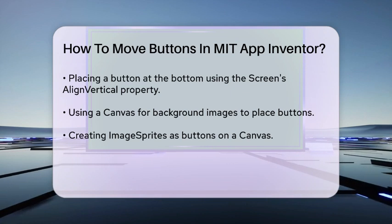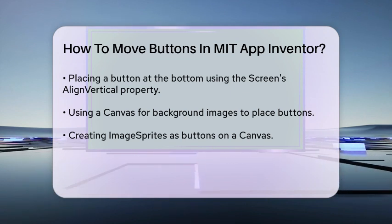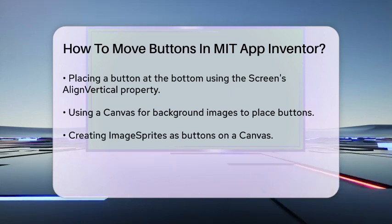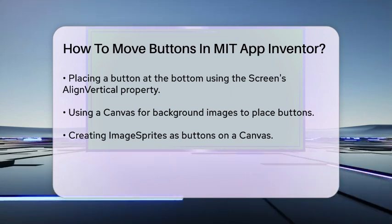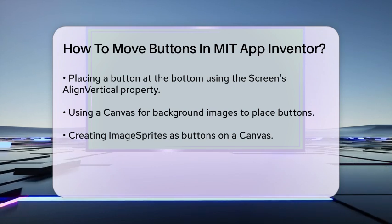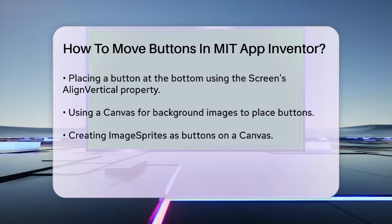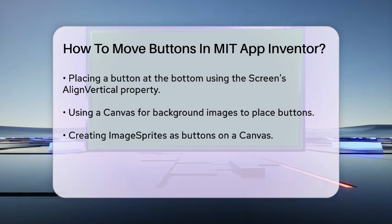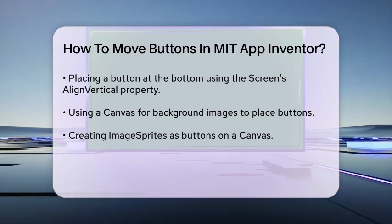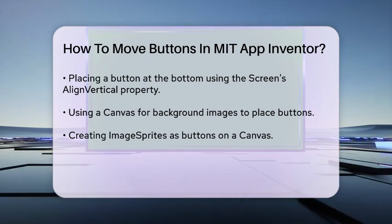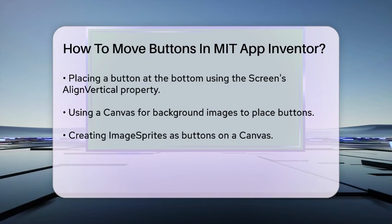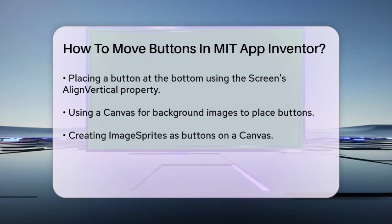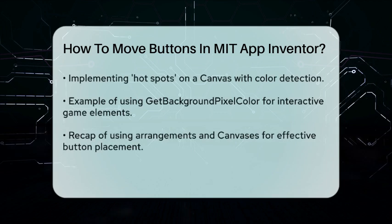Another scenario is when you have a background image and you want to place buttons on specific parts of it. You can't directly place buttons on top of a background image, but you can use a canvas and place image sprites that act as buttons. Alternatively, you can create hot spots on the canvas by using different colors for each area and checking the color when the user touches the screen.